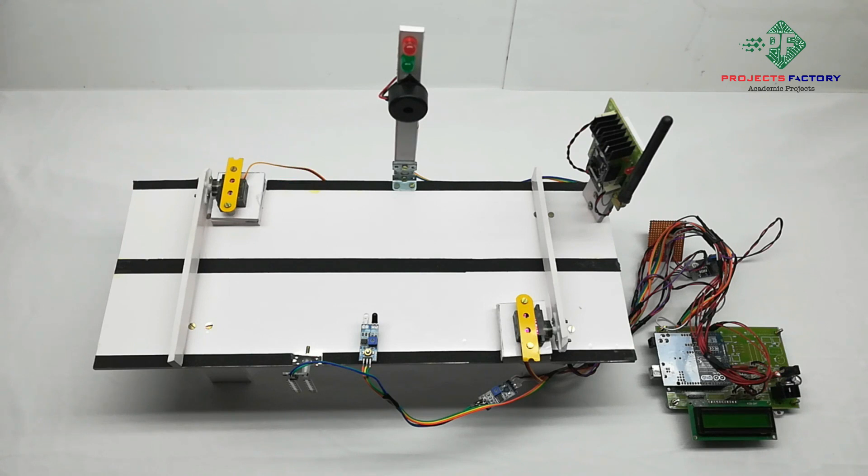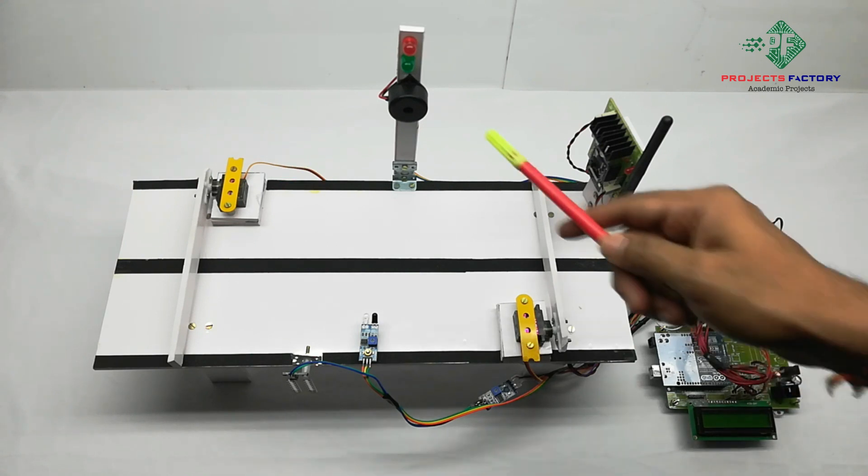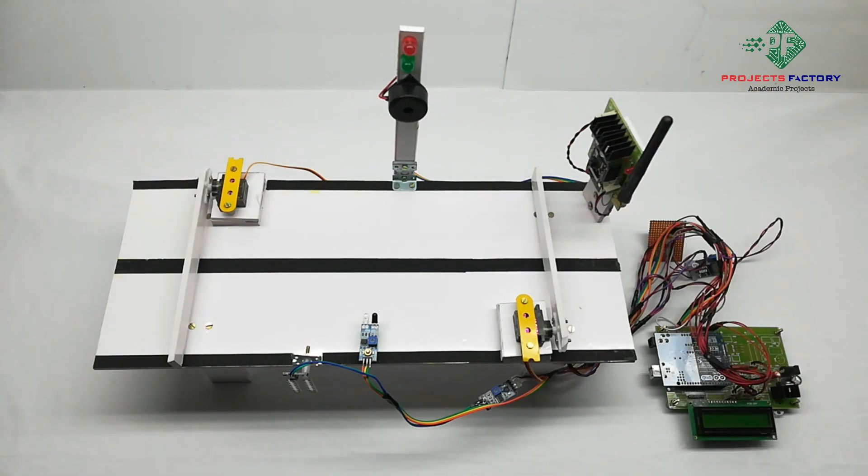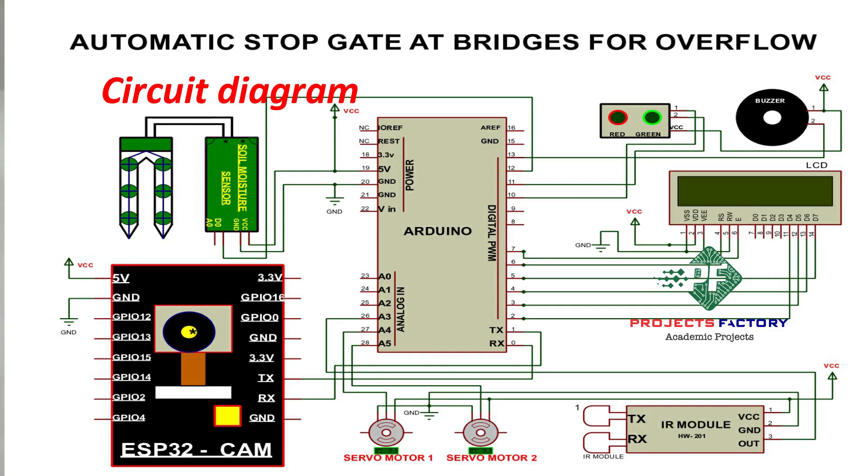Here if no flood then everything is normal, gate open, green LED will be on. If flood occurs then red LED on and gates will be closed. If any person or vehicle crosses then IR is activated and sends an image to the Gmail. Now we will execute our project step by step.